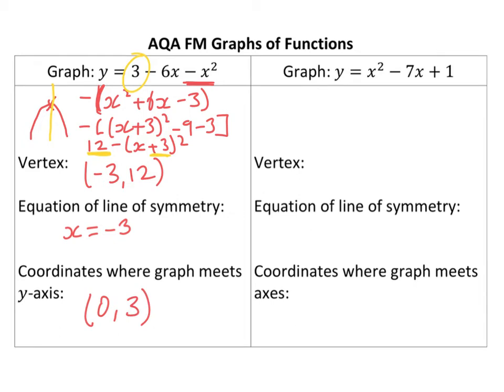Now, this one, I don't need to do this step, because the x squared term is already positive. So, what I'm going to do is x minus 7 over 2 squared, minus 49 over 4, plus 1.